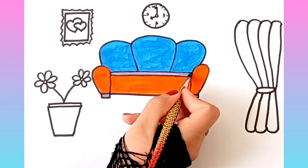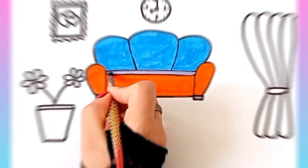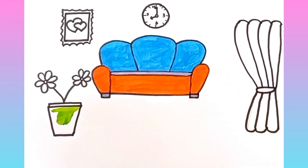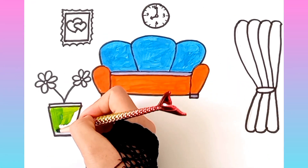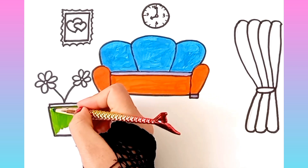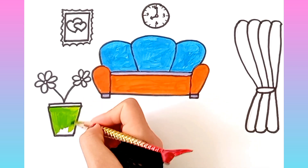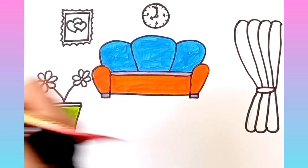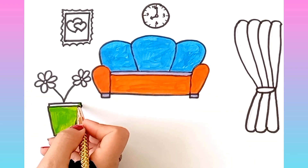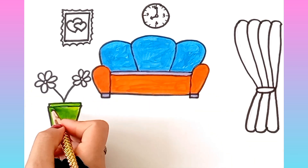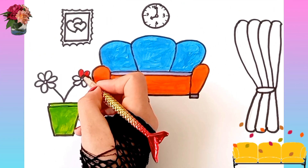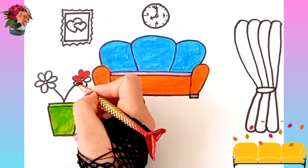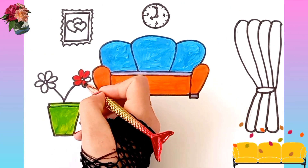G is for goat, g, g, goat. H is for hand, h, h, hand. I is for igloo, i, i, igloo.